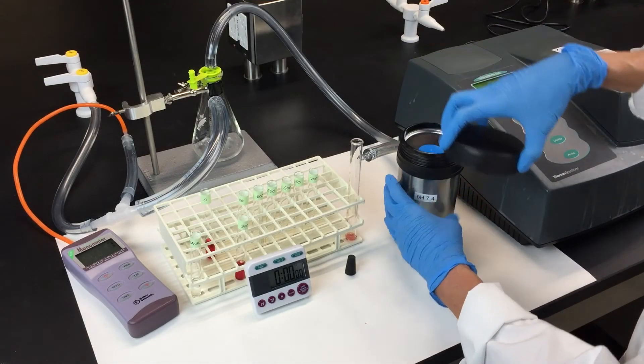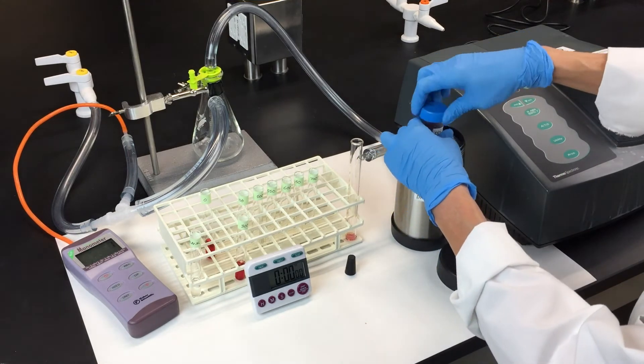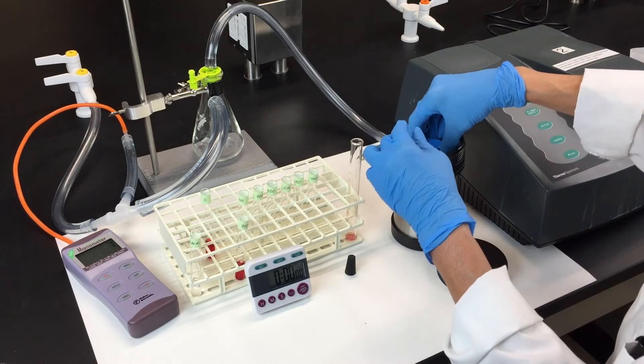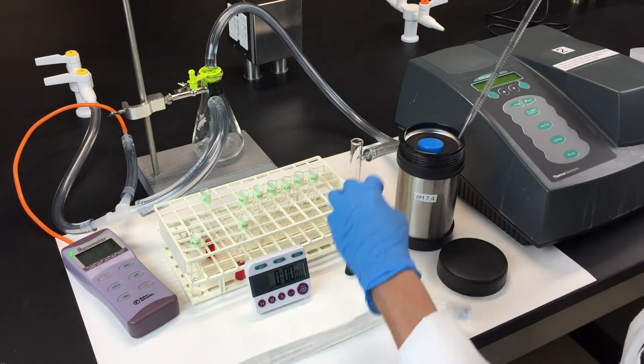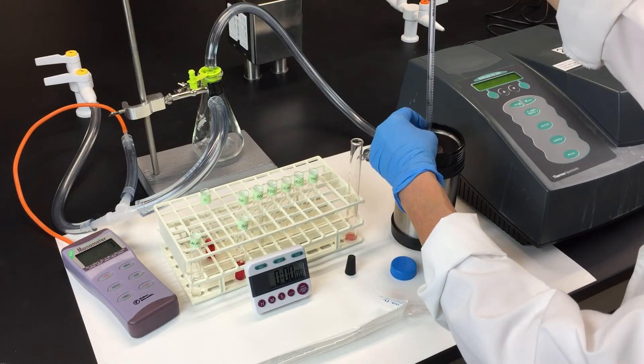Now we'll jump ahead to the 700 millimeter mercury tube, just to show you what happens to the hemolysate under high vacuum pressures. Transfer 2.5 milliliters of the hemolysate to the sidearm tube.